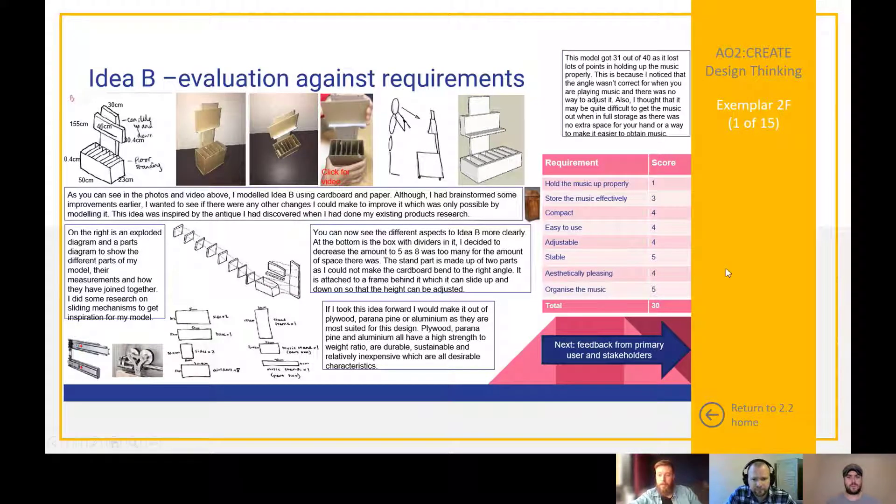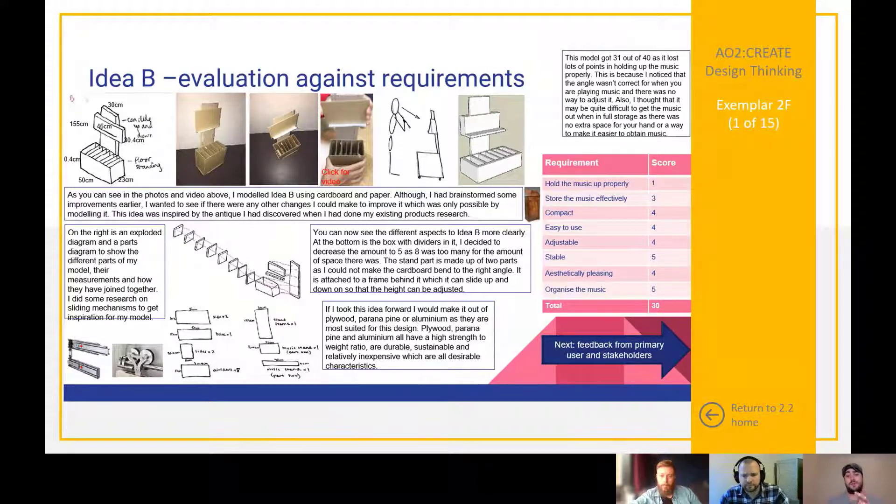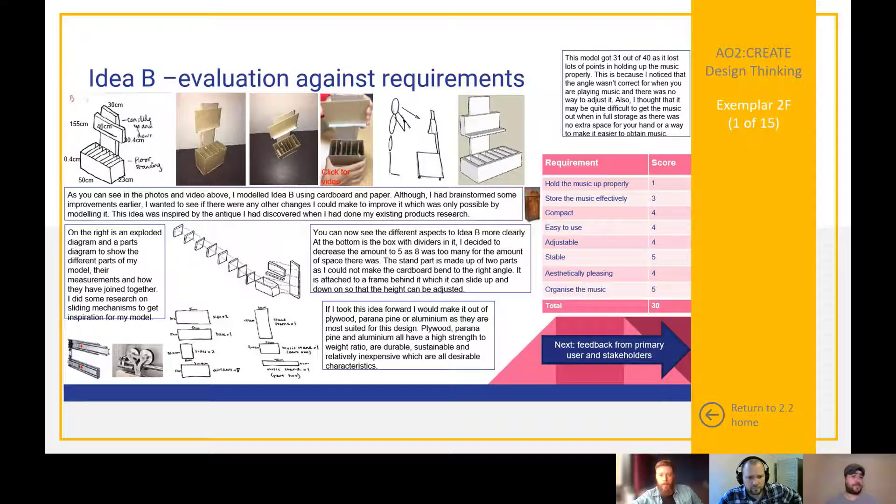A couple of things for me, really. The first thing is this kind of pink table on the right hand side. Although it doesn't explicitly say that these are the PUNs, the Primary User Needs, that's exactly what they are. At this stage in development, you have to be using these PUN tables regularly because what you're doing is critically analyzing the progress that you're making against the primary user needs.